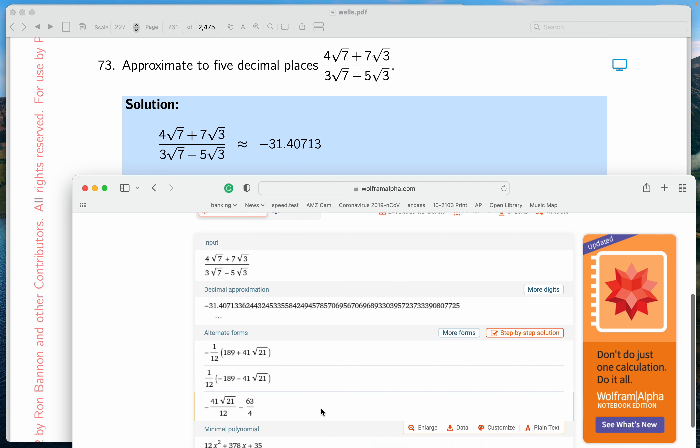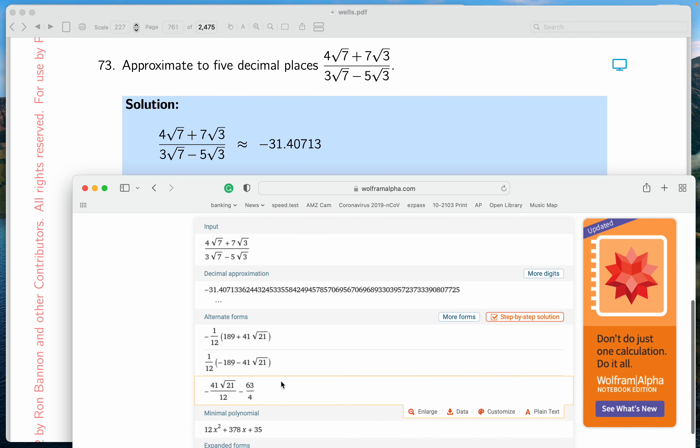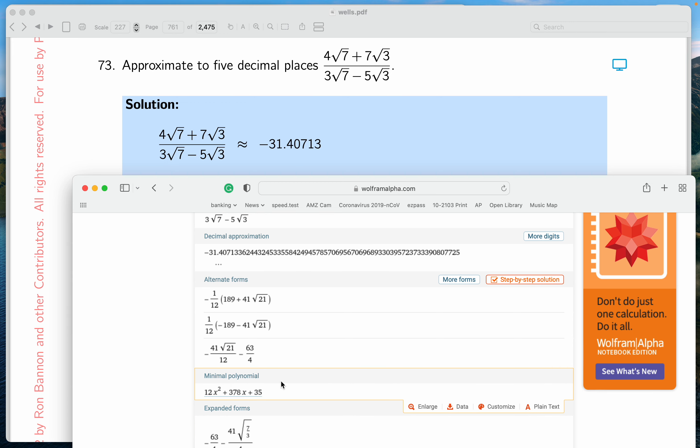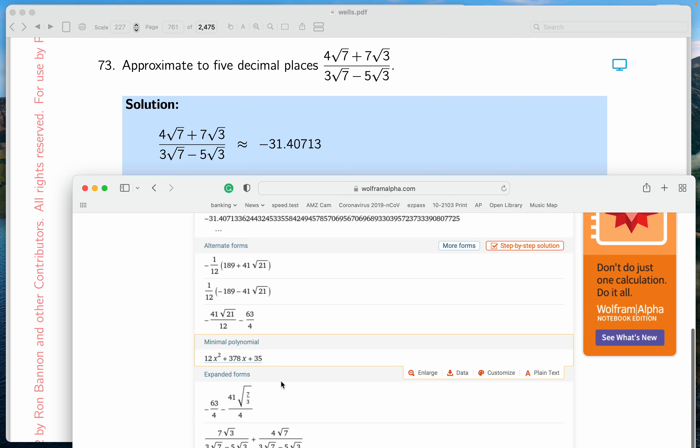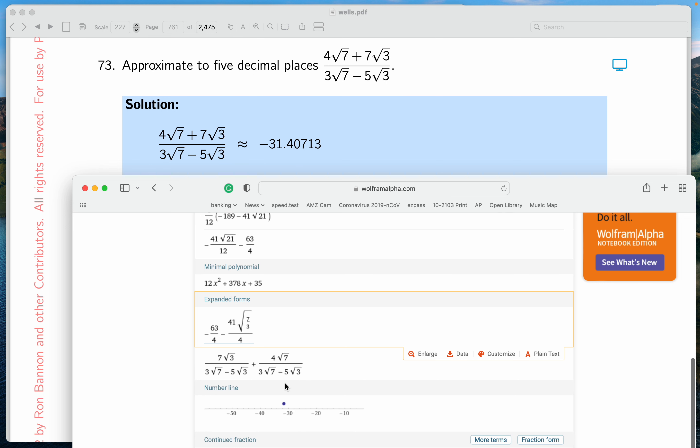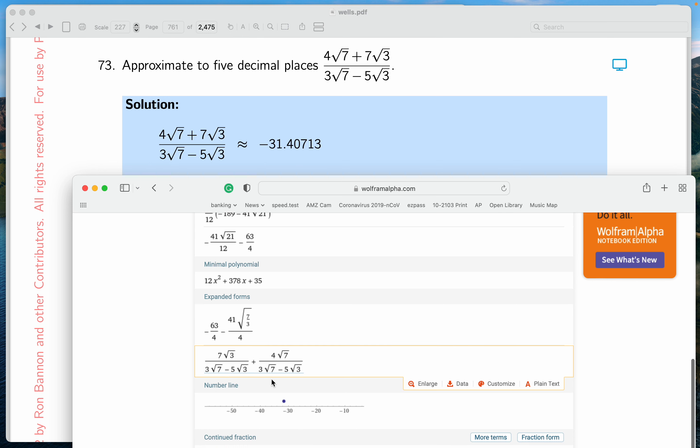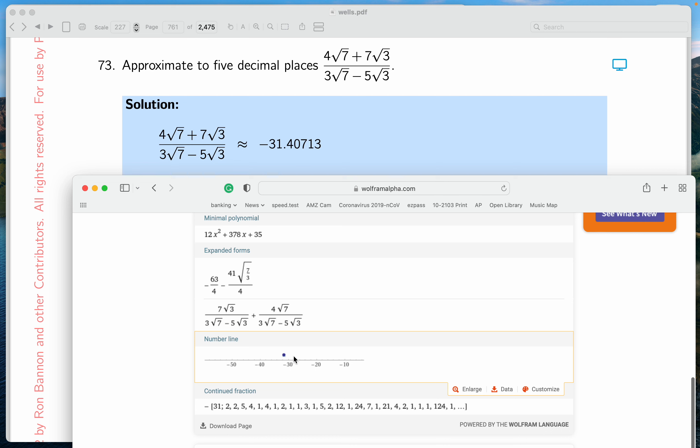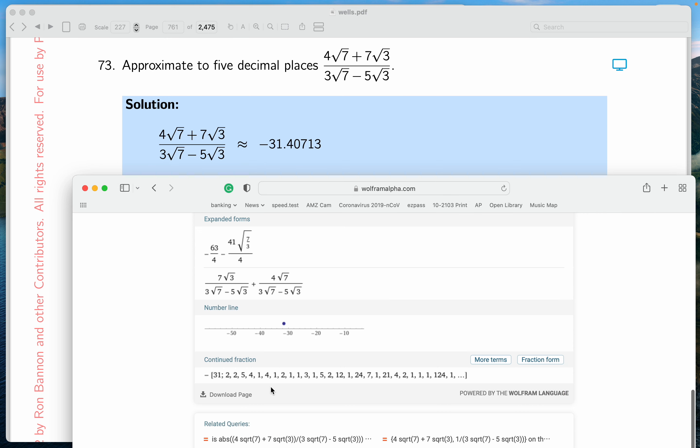So let's take a look. They write this down. Alternative forms, minimal polynomials, stuff that you may not be familiar with. Then expanded forms, this kind of stuff over here. A lot of different things are written down. A location along the axes about where that number is approximately, and then something about continued fractions.